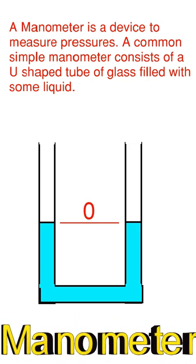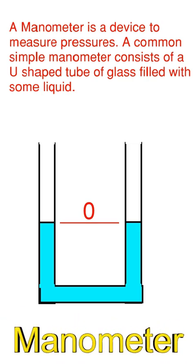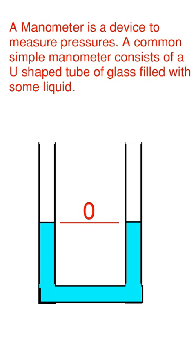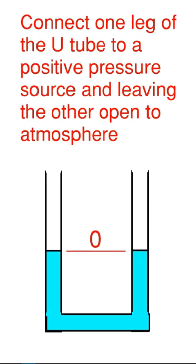A manometer would be used. A manometer is a device to measure pressure. A common simple manometer consists of a U-shaped tube of glass filled with some liquid, in this case water. With the U-tube manometer, connect one leg of the U-tube to the positive pressure source and leave the other open to the atmosphere.